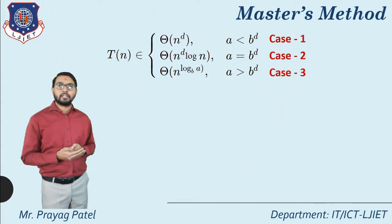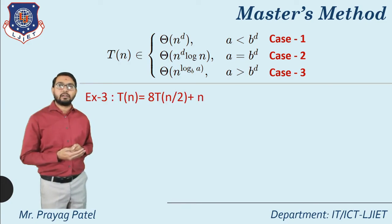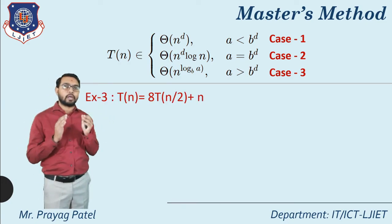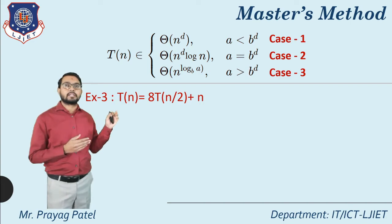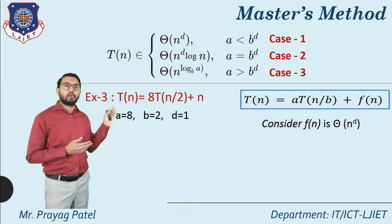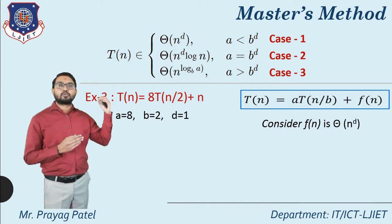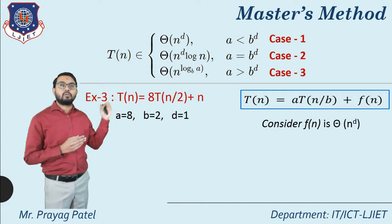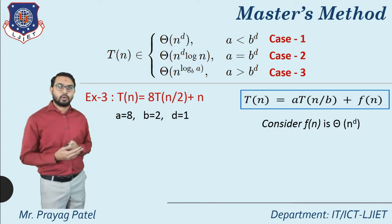Example 3: T(n) = 8T(n/2) + n. Here a = 8, b = 2, and since f(n) = n = n^1, d = 1.